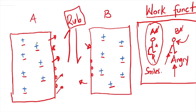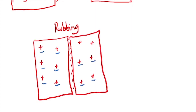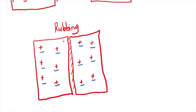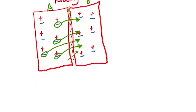The electrons — the negative charges — will move from body A to body B. As these bodies rub each other, body A, which has a lower work function than body B, is going to lose its electrons to body B. It's not going to lose all its electrons, but some of them will move to B. Remember, it's the electrons that move — the positive charges don't move.